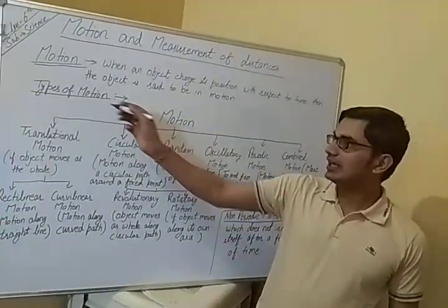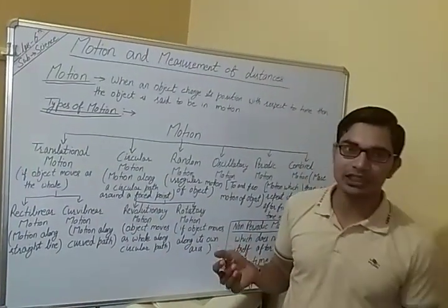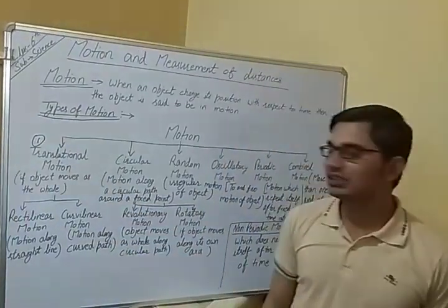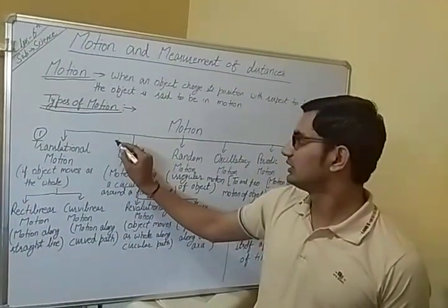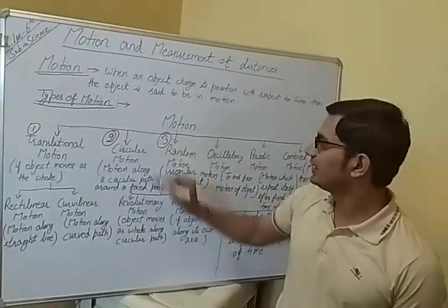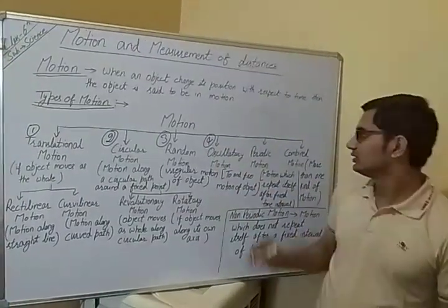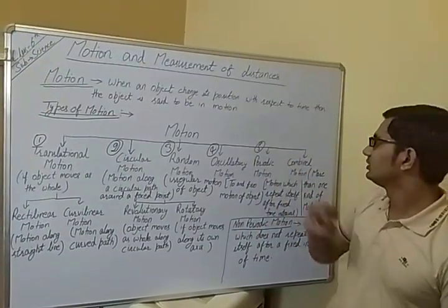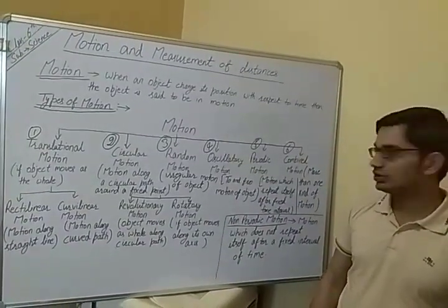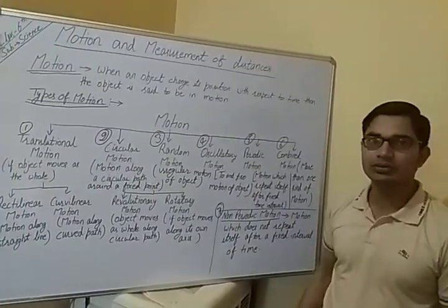Next topic is types of motion. There are different types of motions: first, translational motion; second, circular motion; third, random motion; fourth, oscillatory motion; fifth, periodic motion; sixth, combined motion; and the last one, non-periodic motion.